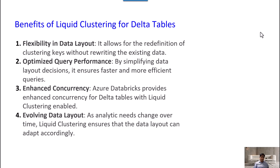The benefits of Liquid Clustering for Delta tables come in four ways. First, it provides flexibility in data layout — allowing you to redefine clustering keys without rewriting the overall dataset. Second, it optimizes query performance because the data layout is well-organized, ensuring faster data retrieval. Third, it enhances concurrency — Databricks provides enhanced concurrency so you can concurrently read or write data. Fourth, it allows the data layout to evolve automatically as your analytic needs change.